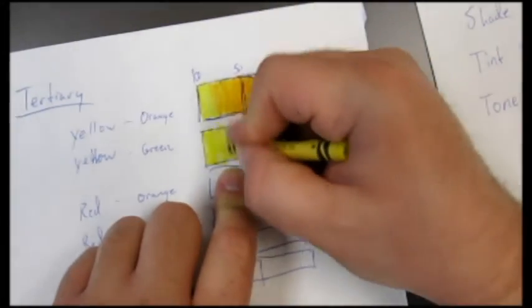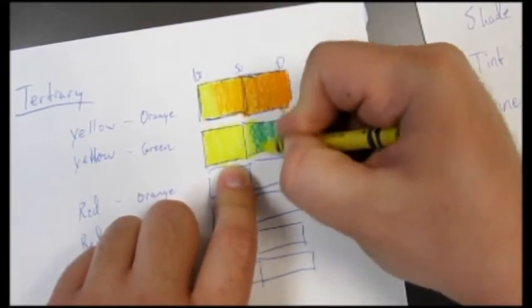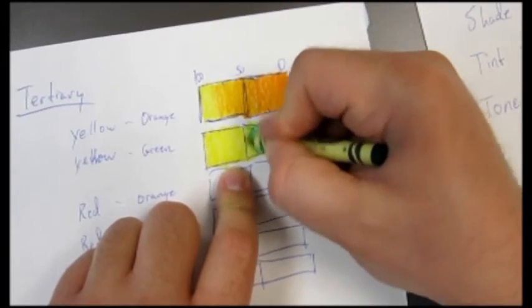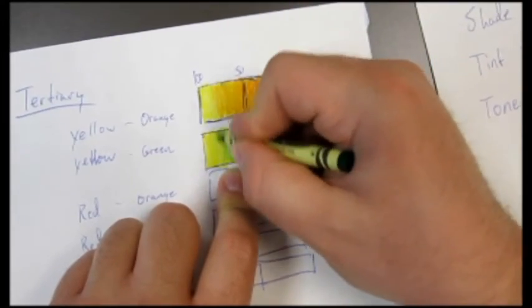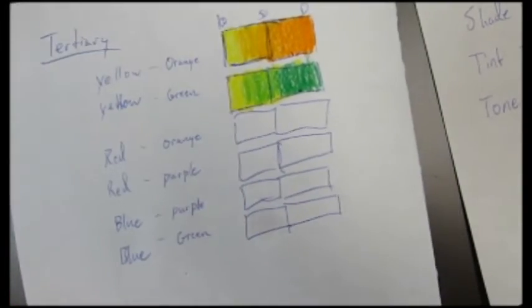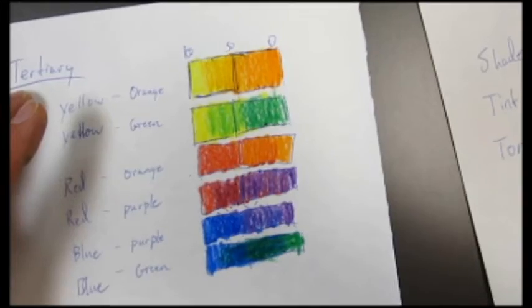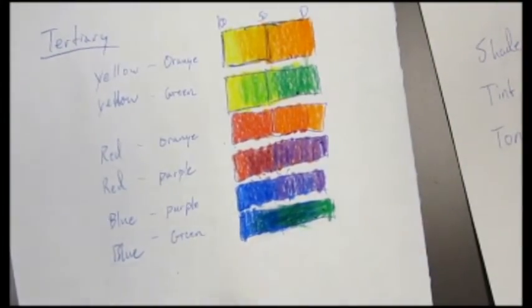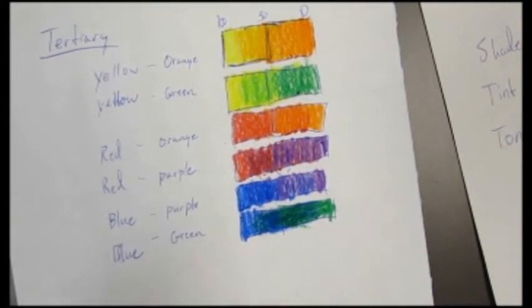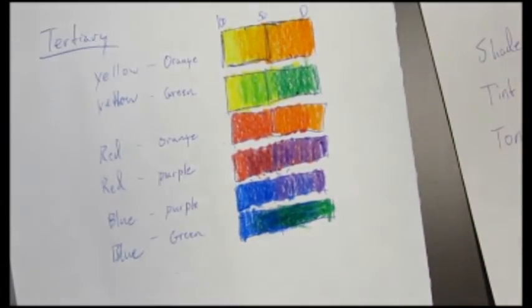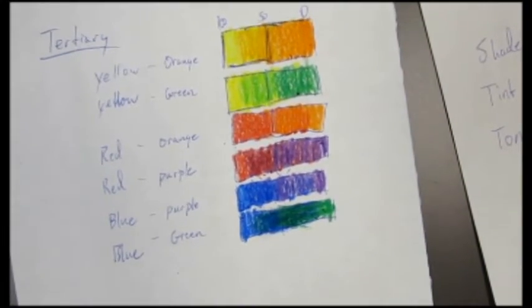Same thing for the next one. You're going to go ahead and repeat this for all six. Make sure they are properly labeled with primary color first, because it's primary language, then secondary language. Go and finish this up. Once you've gotten yours completed, make sure that you have proper blending in each of those. I definitely want to see a proper blend going from that primary color into the secondary color so you have a clean tertiary color in the middle.